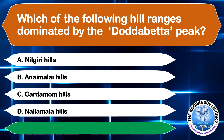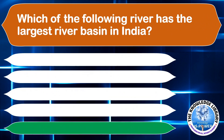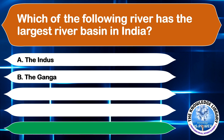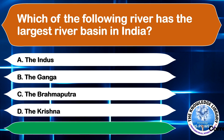Which of the following rivers has the largest river basin in India? A. The Indus, B. The Ganga, C. The Brahmaputra, or D. The Krishna. The correct answer is option B, The Ganga.